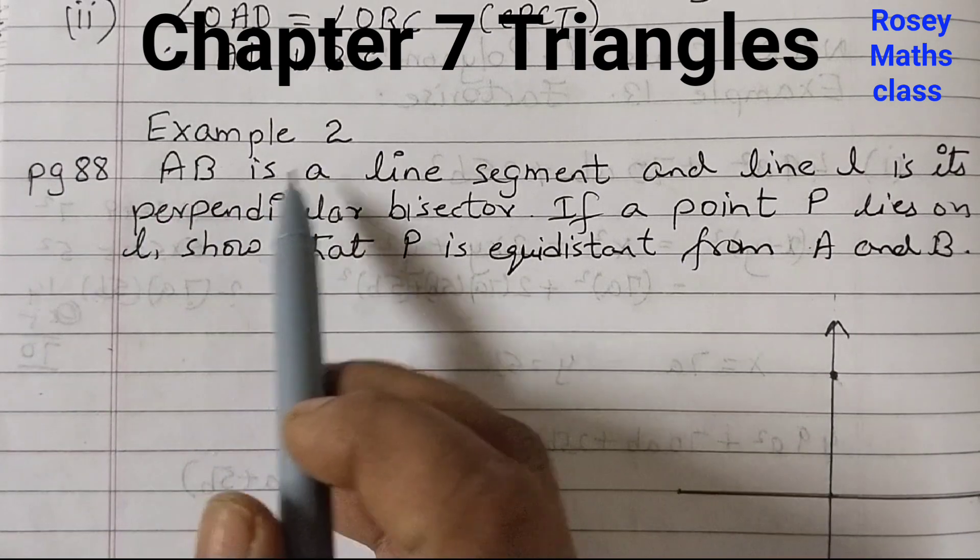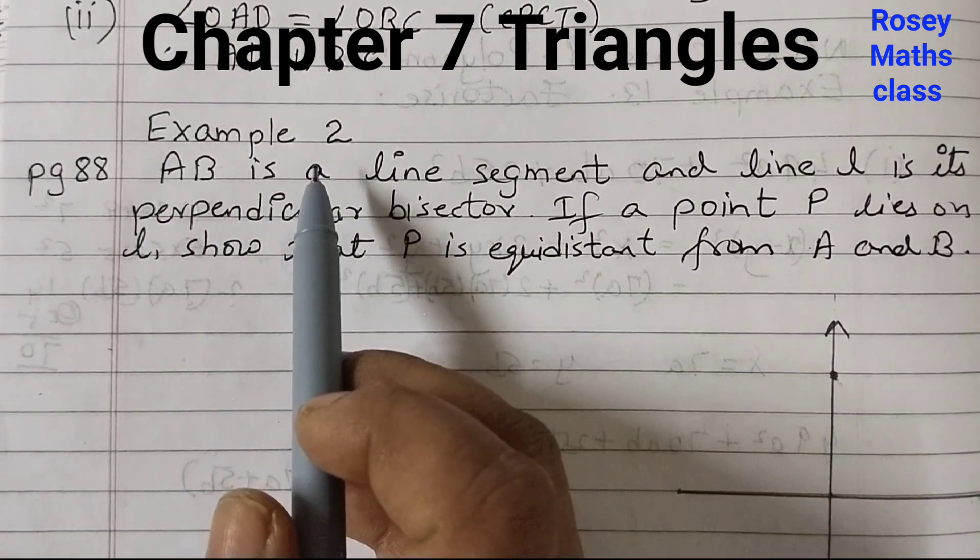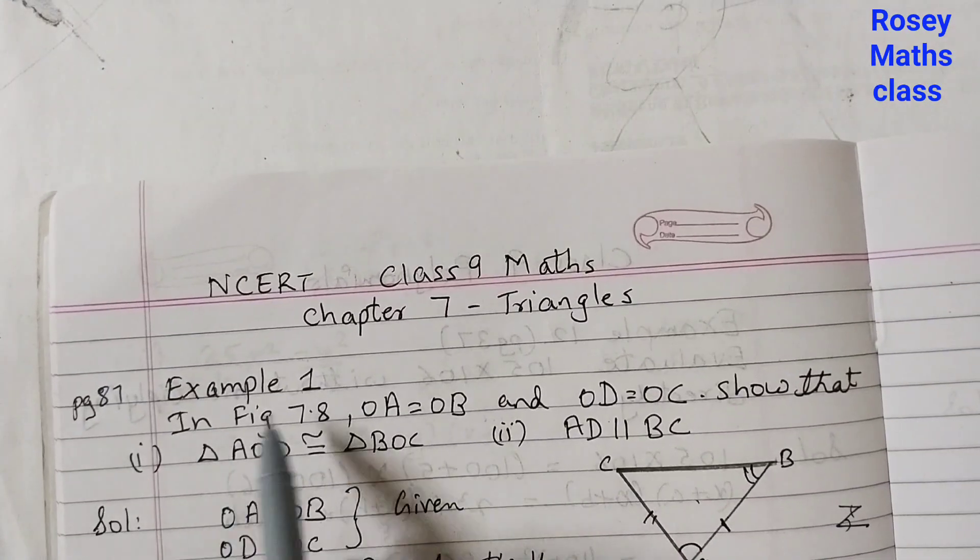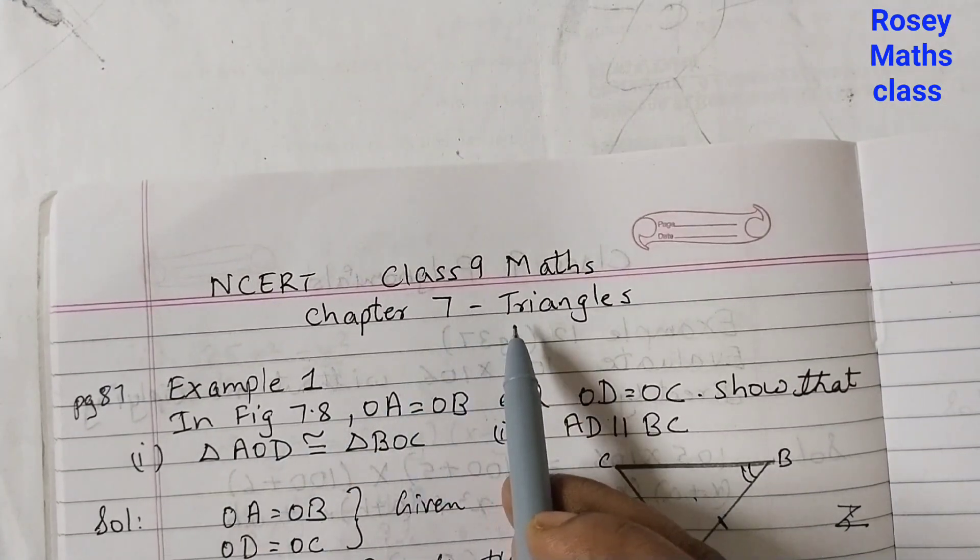Today we shall discuss example number 2 of chapter 7 triangles. Previously we have done example number 1 of chapter 7 triangles and now we are going to do example number 2.